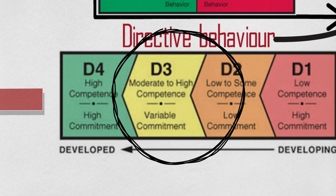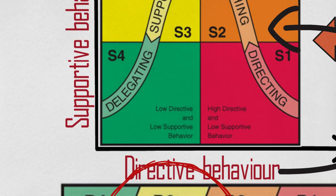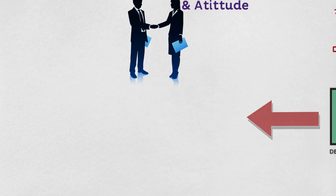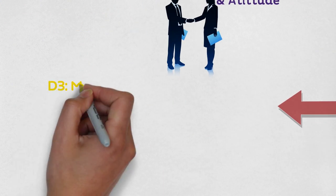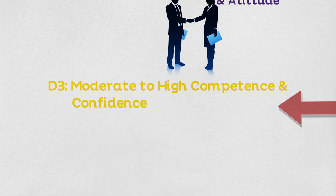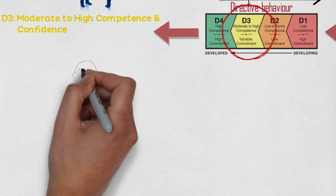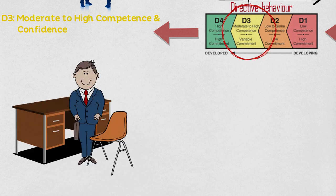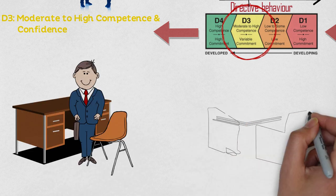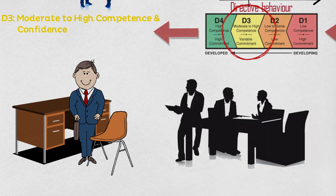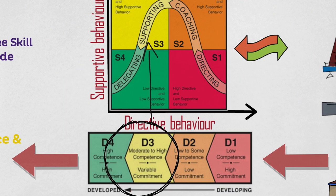D3 is moderate competence and confidence. Again using the same example: I worked there for almost three years and was promoted to junior store manager. I had learned almost every job in the store and was competent and confident in my managerial duties. However, every now and then I would still seek decision acceptance from my boss, as I still lacked the experience of being a head store manager.